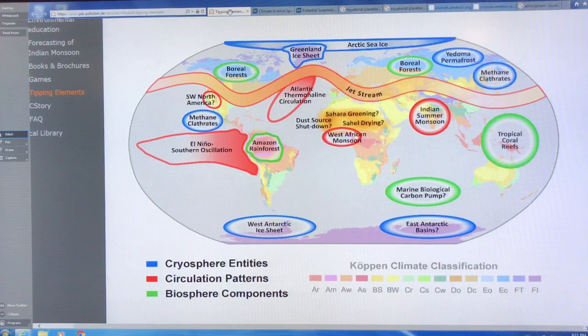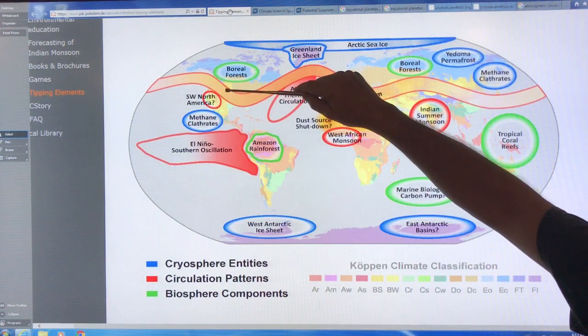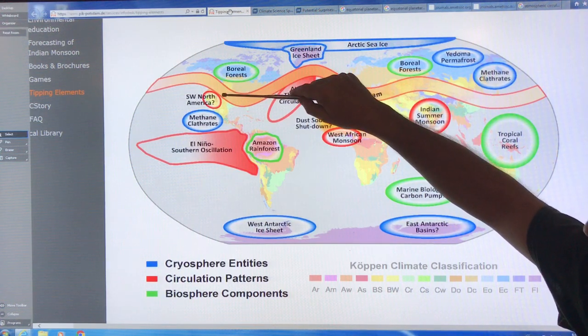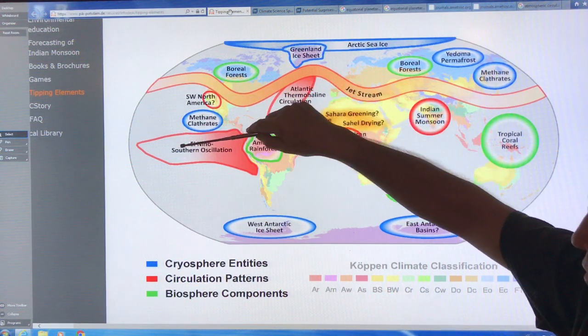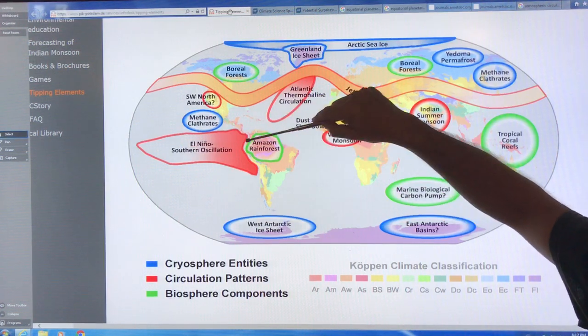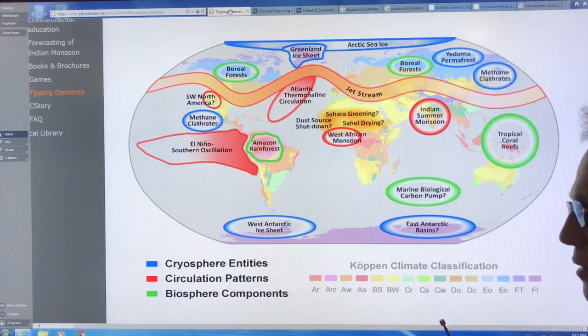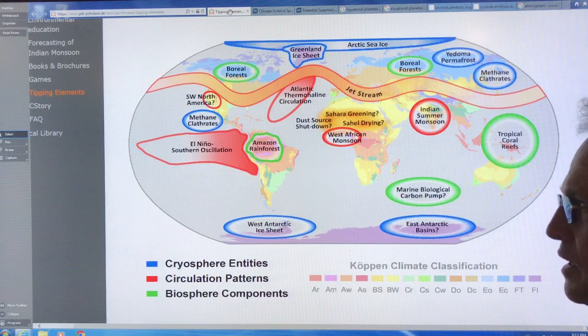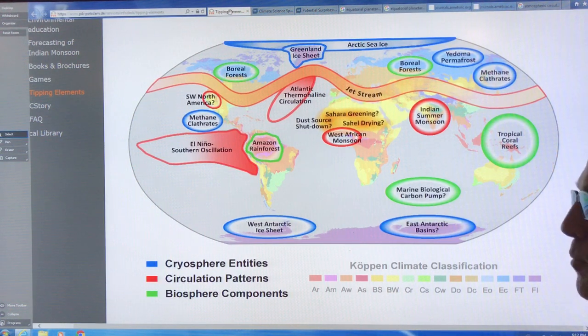Now the circulation patterns, they can affect, so southwest of North America is very vulnerable to very, very long term drought. The El Nino Southern Oscillation or ENSO is very susceptible to change, to rapid change to tipping, perhaps into a permanent El Nino state, or perhaps a much more intense El Nino state, and a much weaker La Nina colder state.